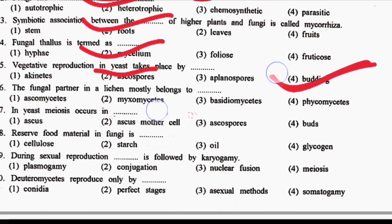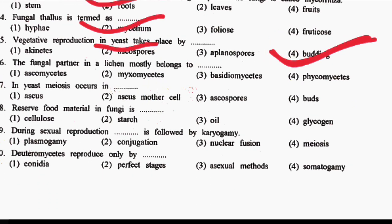Next question: the fungal partner in a lichen mostly belongs to DASH. Option 1: Ascomycetes. Option 2: Myxomycetes. Option 3: Basidiomycetes. Option 4: Phycomycetes. The correct answer is Option 1, that is Ascomycetes.